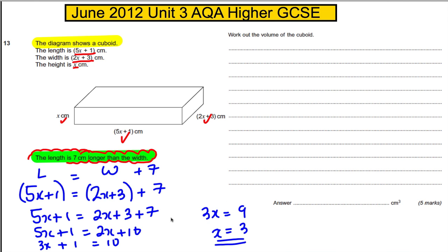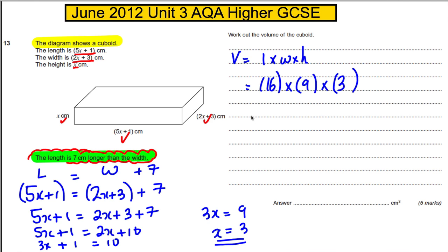Whichever method you preferred, that gets us the bulk of the marks. The volume is the length times the width times the height. The length, 5x plus 1, is therefore 16cm. The width, 2 times 3 plus 3, is 9cm. The height is just 3. Multiplying these together on the calculator gives us 432 cm cubed.